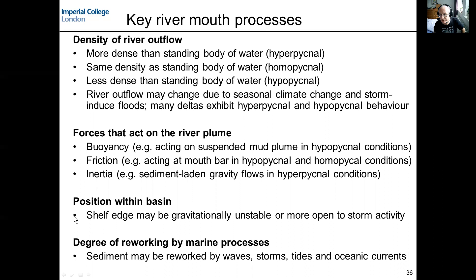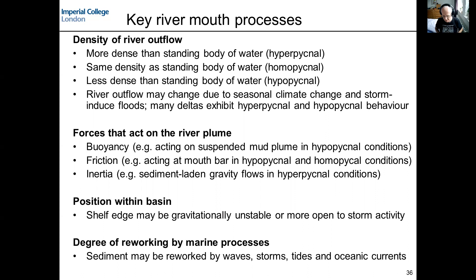We can also think about the position of a delta within the basin — is it building out on the inner part of the shelf, far from the shelf edge, or built out to the shelf edge itself, where it might be exposed to strong waves and tides directly in the open ocean? We can also consider the degree to which waves, storms, and tides are important — captured in the classification of deltas as river-dominated, wave-dominated, or tide-dominated.